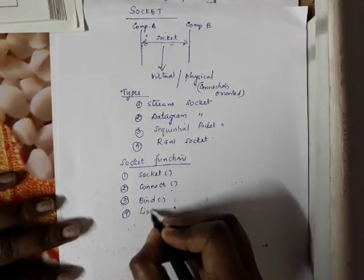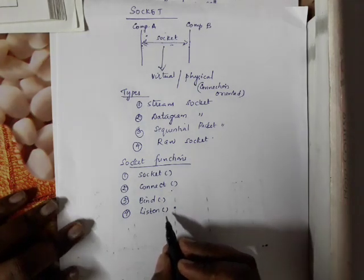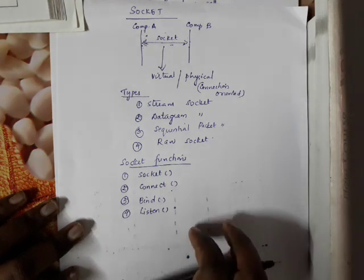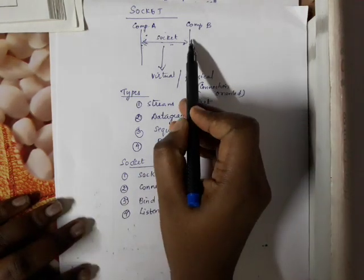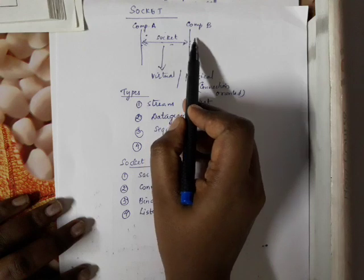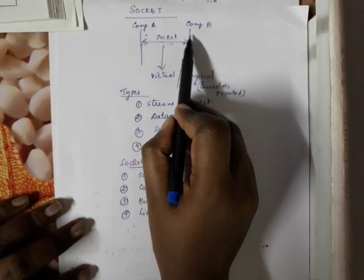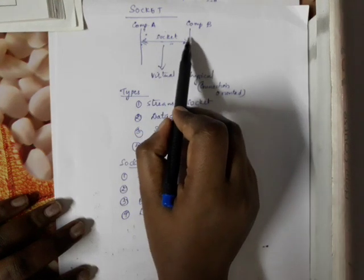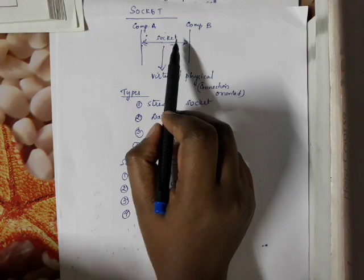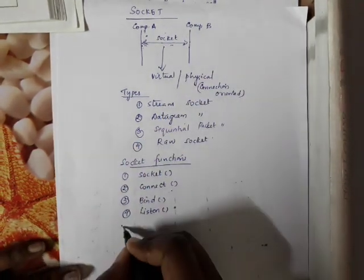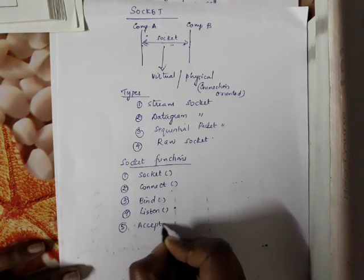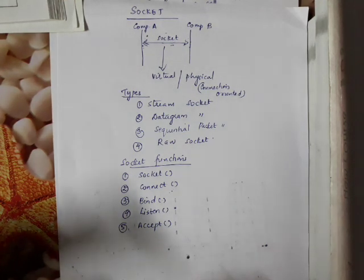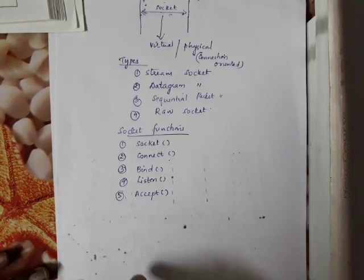The listen function is used to listen on the socket for incoming connections and incoming data. Normally the server uses the listen function to listen for client connections. If the server is listening, it can receive incoming messages. The accept function is used to accept an incoming connection — only incoming connections are accepted by this function.